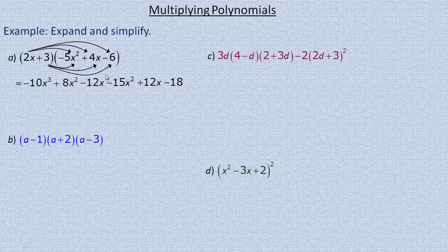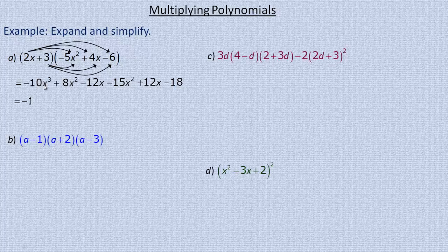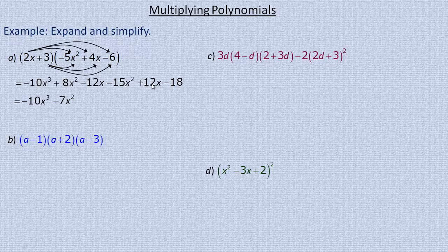Now that's the expanding part. The simplifying part is to collect like terms. I've got 8x squared and negative 15x squared — since they're both x squared terms, I simplify them into one: 8x squared minus 15x squared is minus 7x squared. There's only one x cubed term, so negative 10x cubed stays. Negative 12x and positive 12x are opposites, so they add to zero — no x term in the final answer. Then we just add the minus 18.